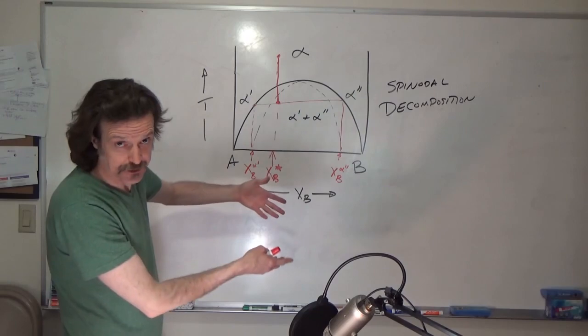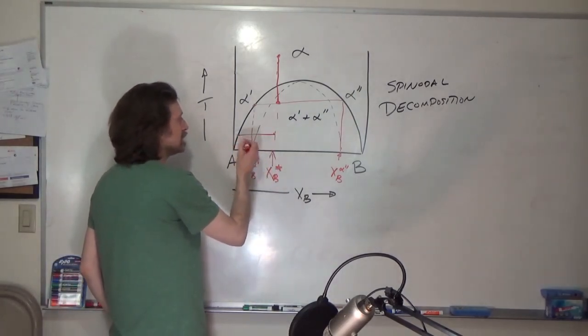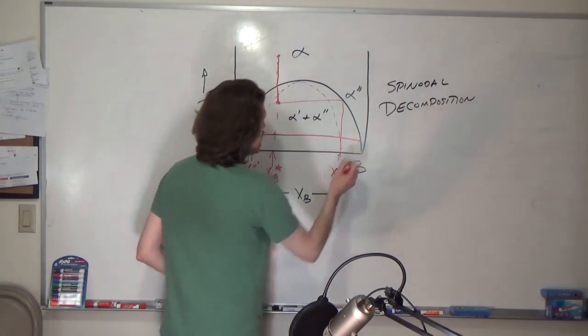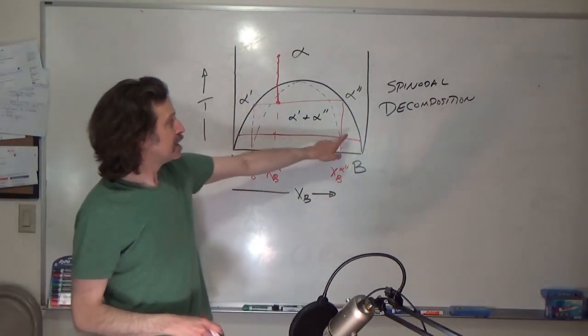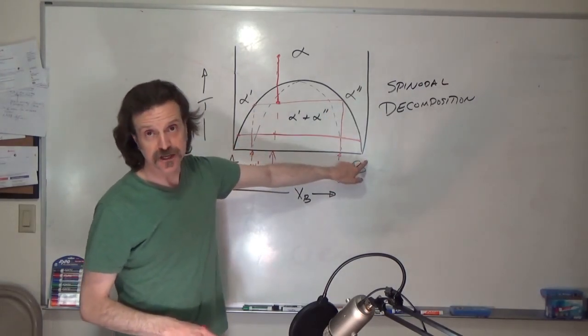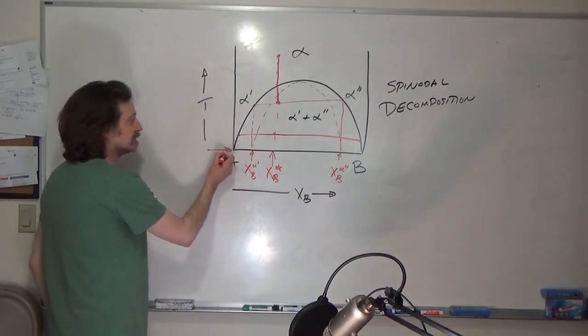As we continue to cool, for example approaching zero Kelvin, our alpha prime is getting more and more rich in A, and alpha double prime is getting more and more rich in B.